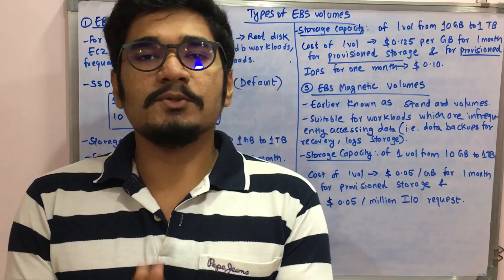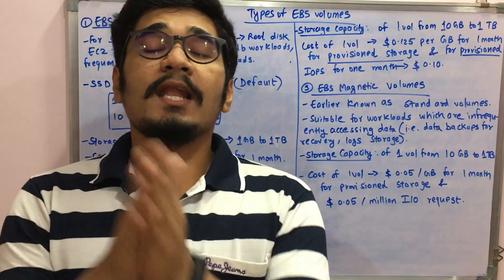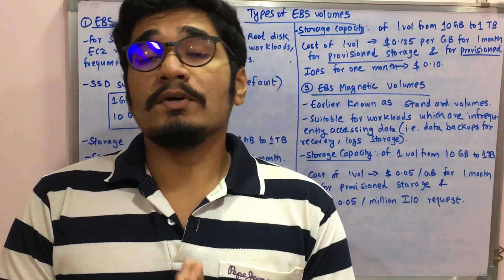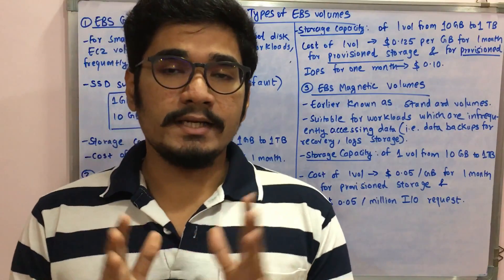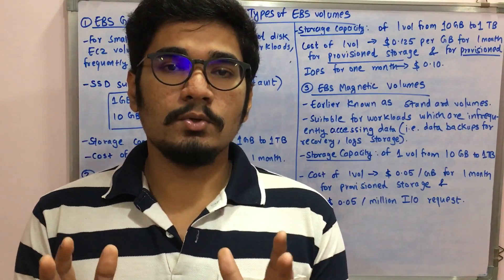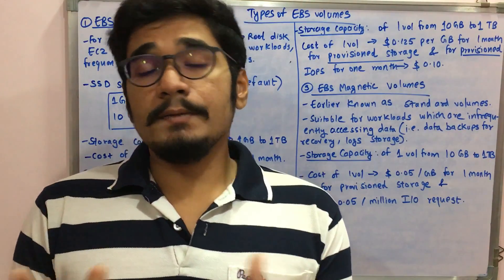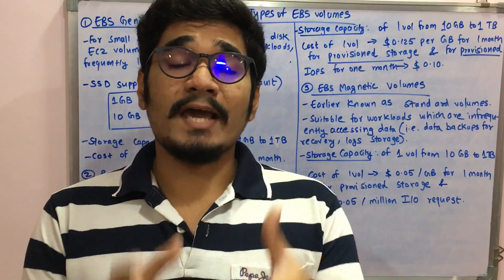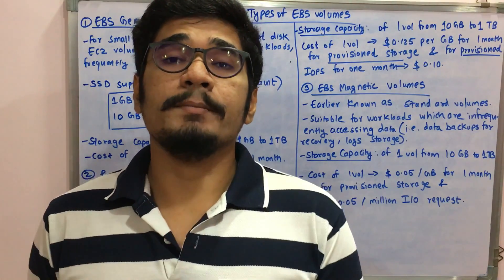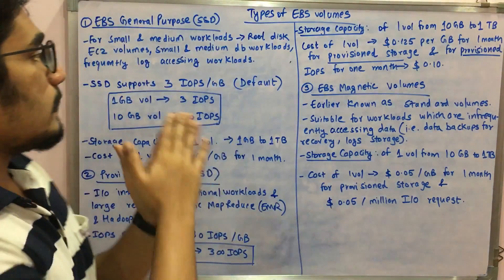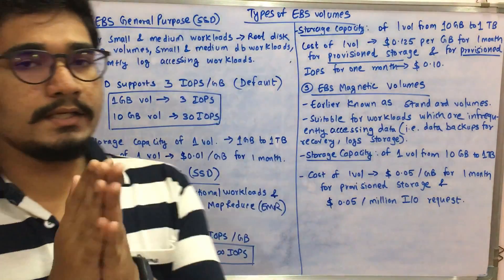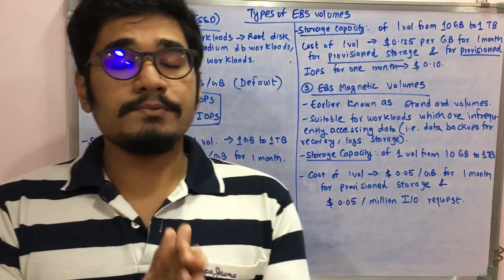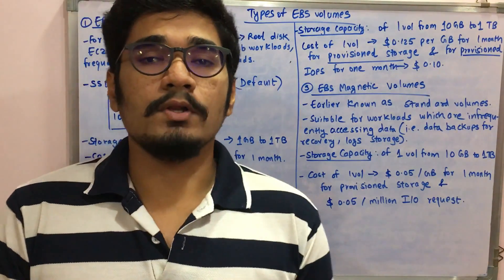Hey guys, welcome back to my channel. In the last video we saw what was Amazon Elastic Block Storage, that is EBS. EBS has got three different types according to its characteristics, performance, and cost, which we'll be seeing in today's video. So let's start with the types of EBS volumes.